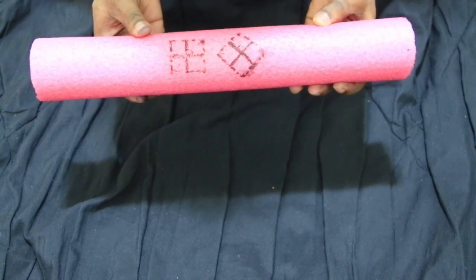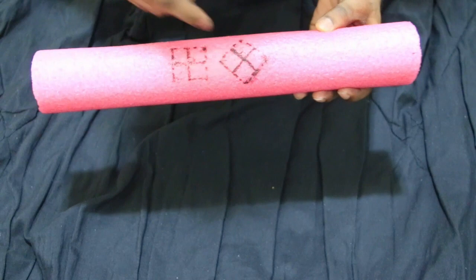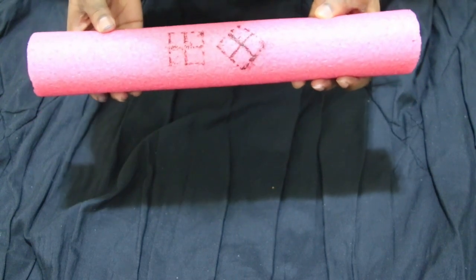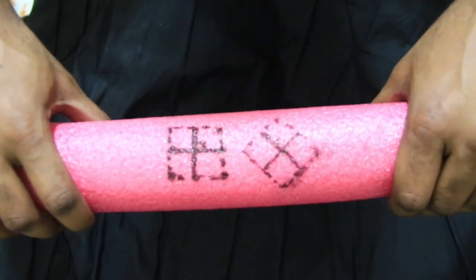I would like you to observe these two sets of perpendicular lines as I subject this cylindrical object to torsion loading. Let's see what happens.